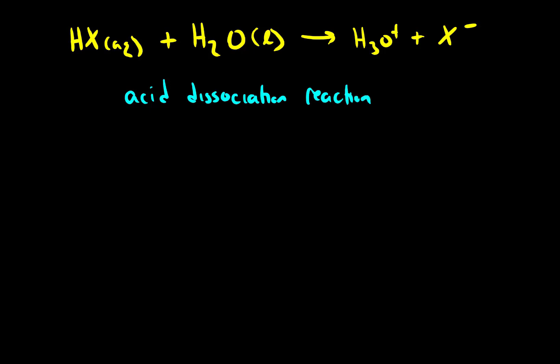Every single acid that gets dissolved in water undergoes this reaction. And this is the way in which acids create hydronium, which we know corresponds to a low pH. So the way that acids create an acidic solution is that they dissociate to make hydronium, which causes the solution to become acidic.